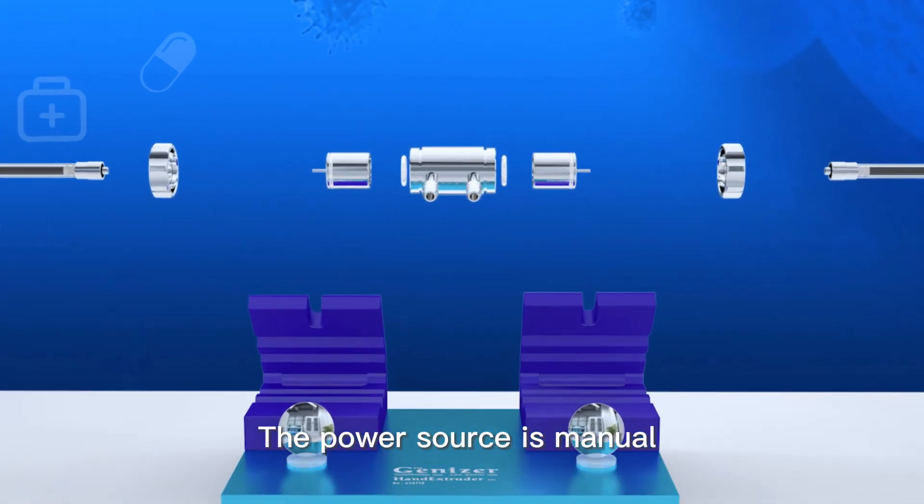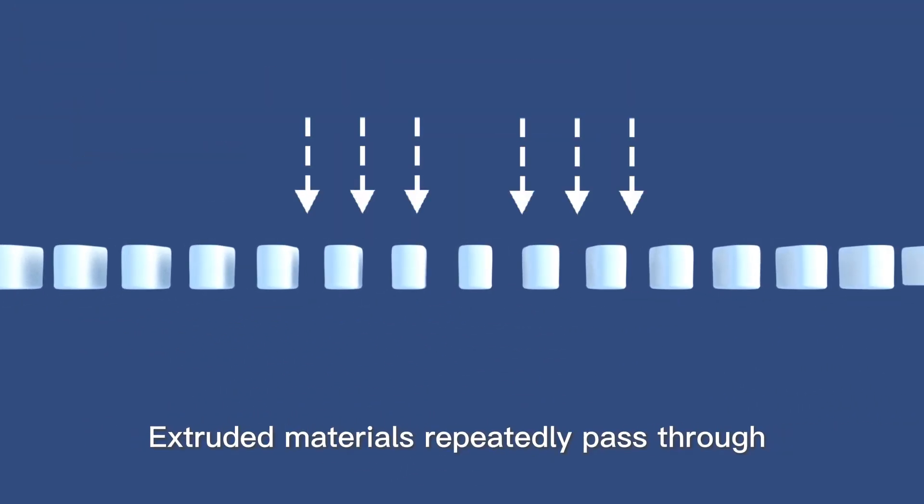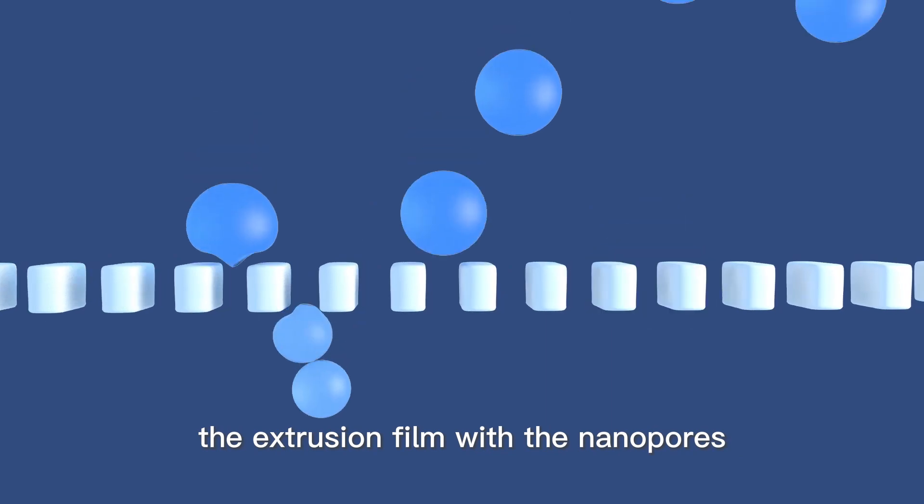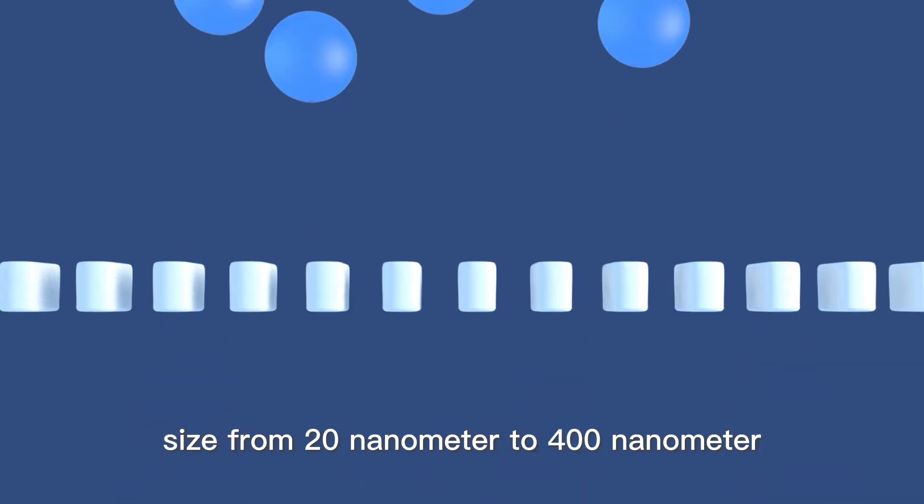The power source is manual. Generate certain pressure by pushing one side. Extruded materials repeatedly pass through the extrusion film with the nanopores. Preparation of liposomes with uniform particle size from 20 nanometer to 400 nanometer.